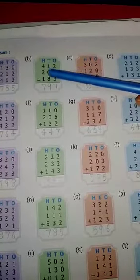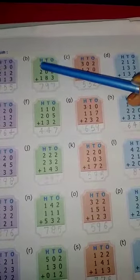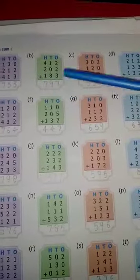1 plus 0 plus 8 is equal to 9. And 4 plus 2 plus 1 is equal to 7.